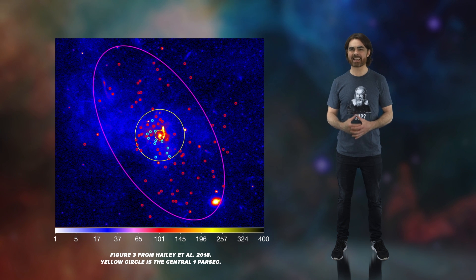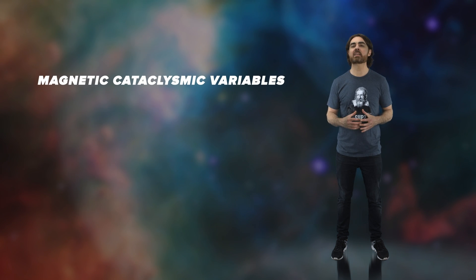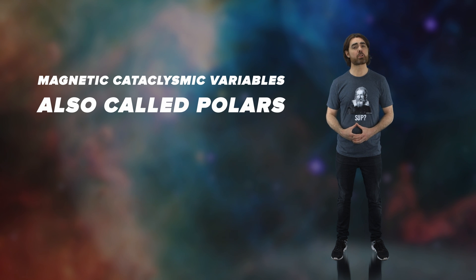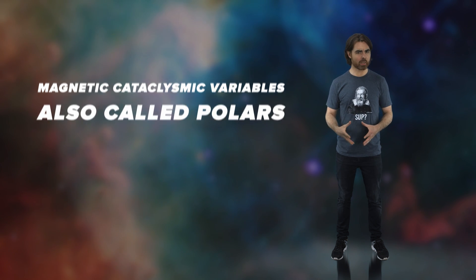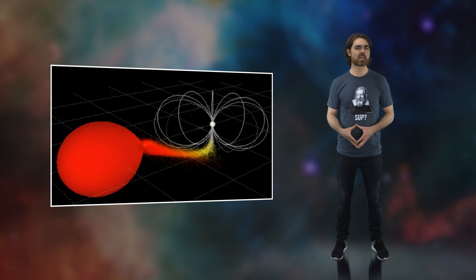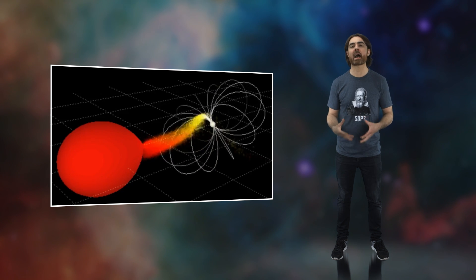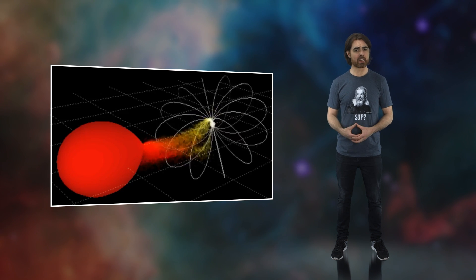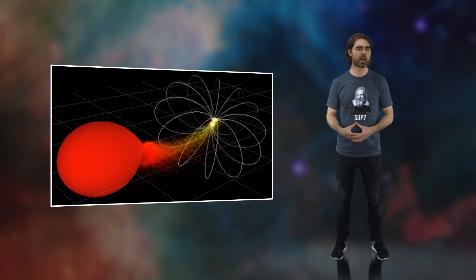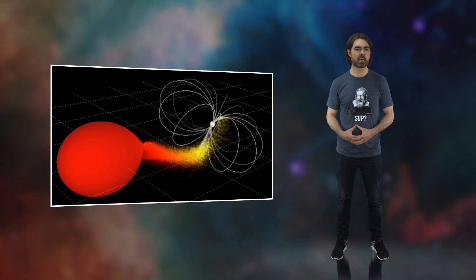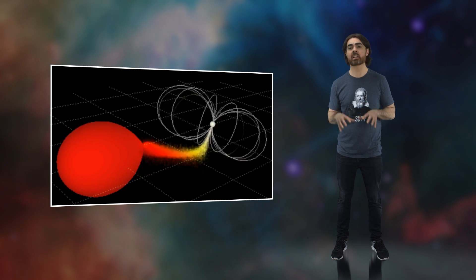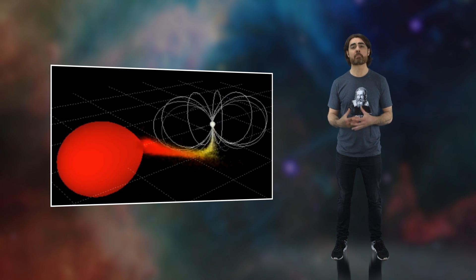One we expect to be common in the galactic core are magnetic cataclysmic variables, also called polars. Polars are a bit like x-ray binaries, except instead of a black hole or a neutron star, you have a white dwarf with a powerful magnetic field. Those magnetic fields act sort of like a dam, allowing gas from the companion star to build up and then fall very suddenly onto the white dwarf, producing a burst of x-rays.